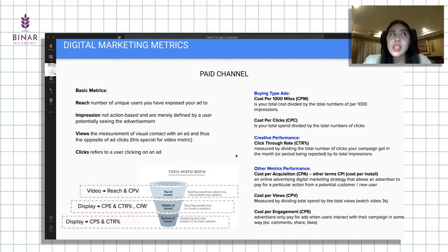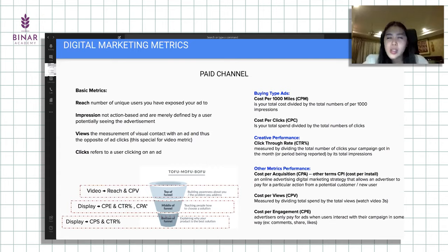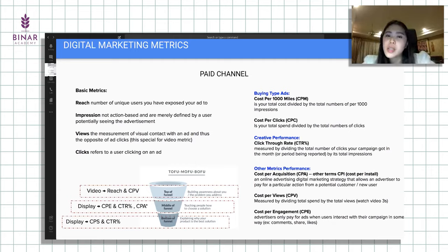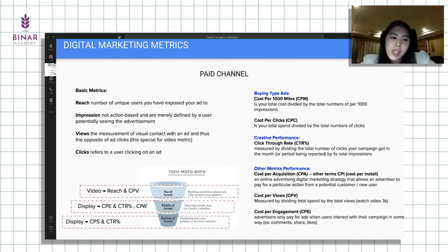Benchmarknya itu CTR 1%. Kalau lebih dari 1%, tergantung platformnya. Kayak Twitter ads itu bisa 5-10% CTR-nya. Kalau di Facebook mungkin 0,5% itu udah cukup bagus. Jadi tergantung platform channel apa yang digunakan. Tiap channel ini ada lagi metrics kayak CPE, CPA, atau CPS.